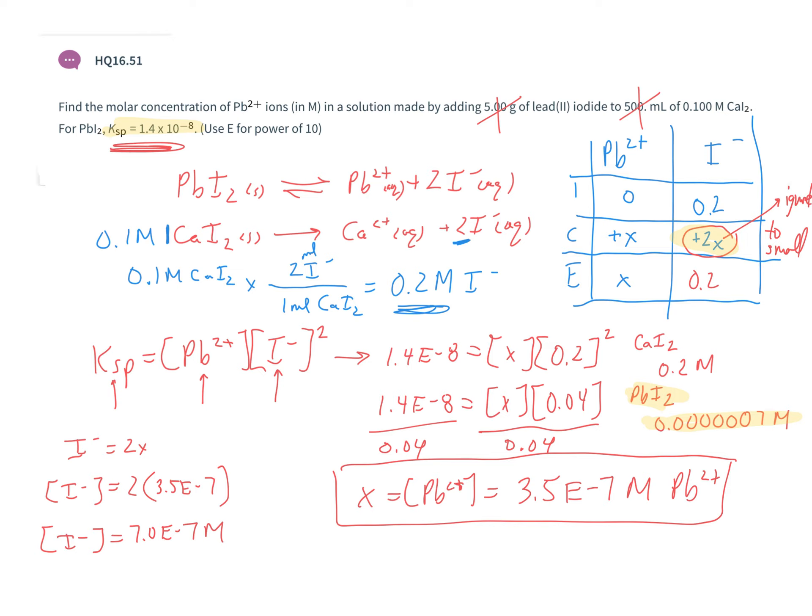The common ion is in much larger concentration than what we'd get from the weak electrolyte, which confirms the approximation is valid.